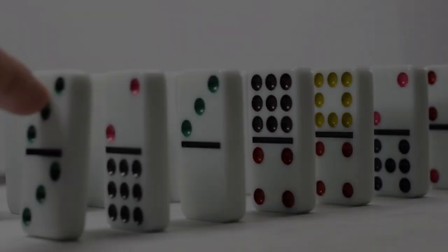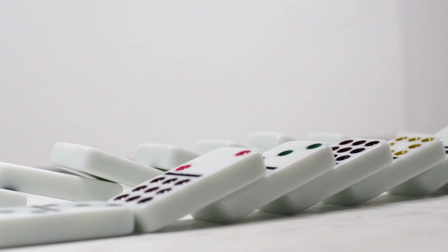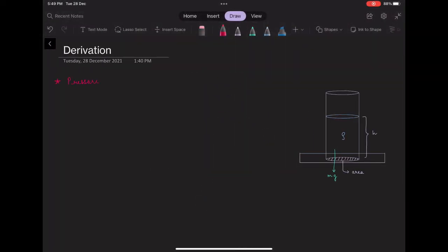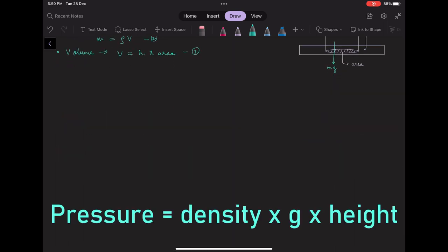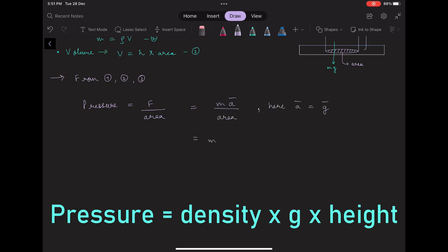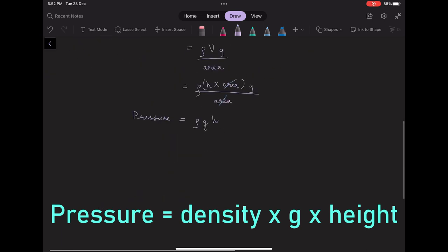Well gravity comes into picture here. Simply put due to the position of the liquid it exerts an opposing pressure at the base. Mathematically pressure of a column of liquid at the base is given by the formula pressure equals density of liquid which is denoted by rho times acceleration due to gravity which is denoted by small g times height of the column.